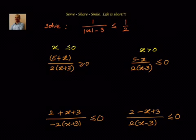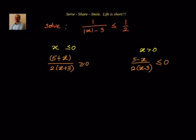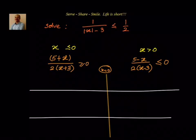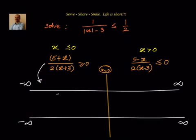For x less than 0, the solution comes from the first expression, and for x greater than 0, from the second. We draw two number lines and apply the wavy curve method. The critical points for the first case are minus 5 and minus 3, and for the second case they are 3 and 5.